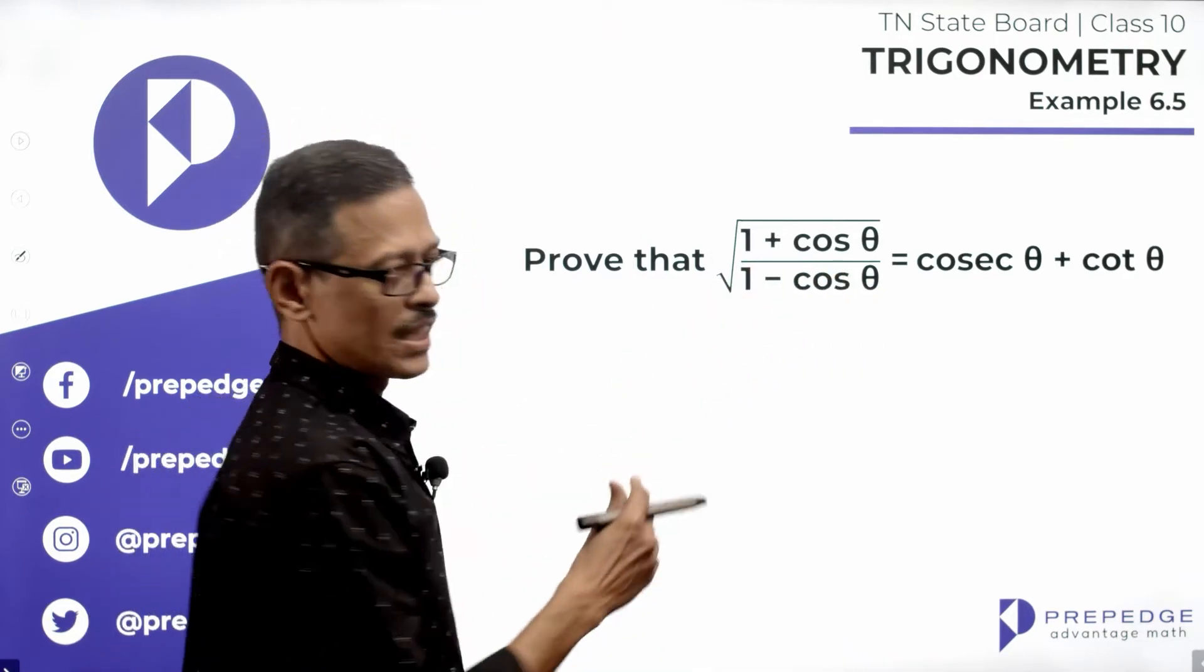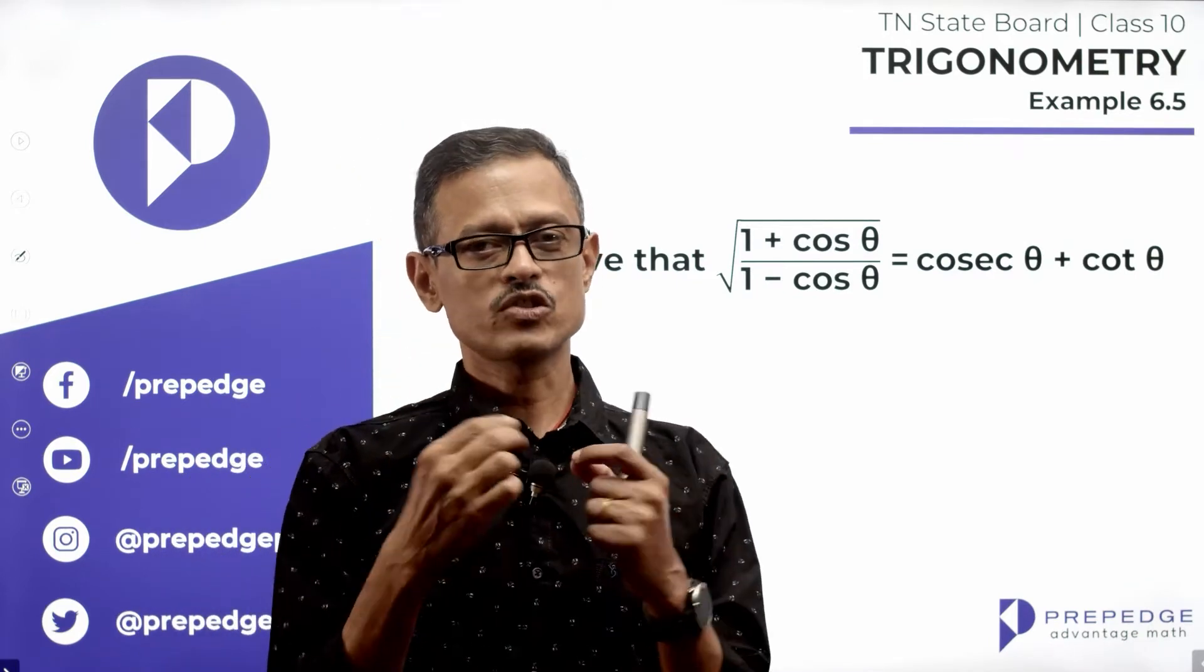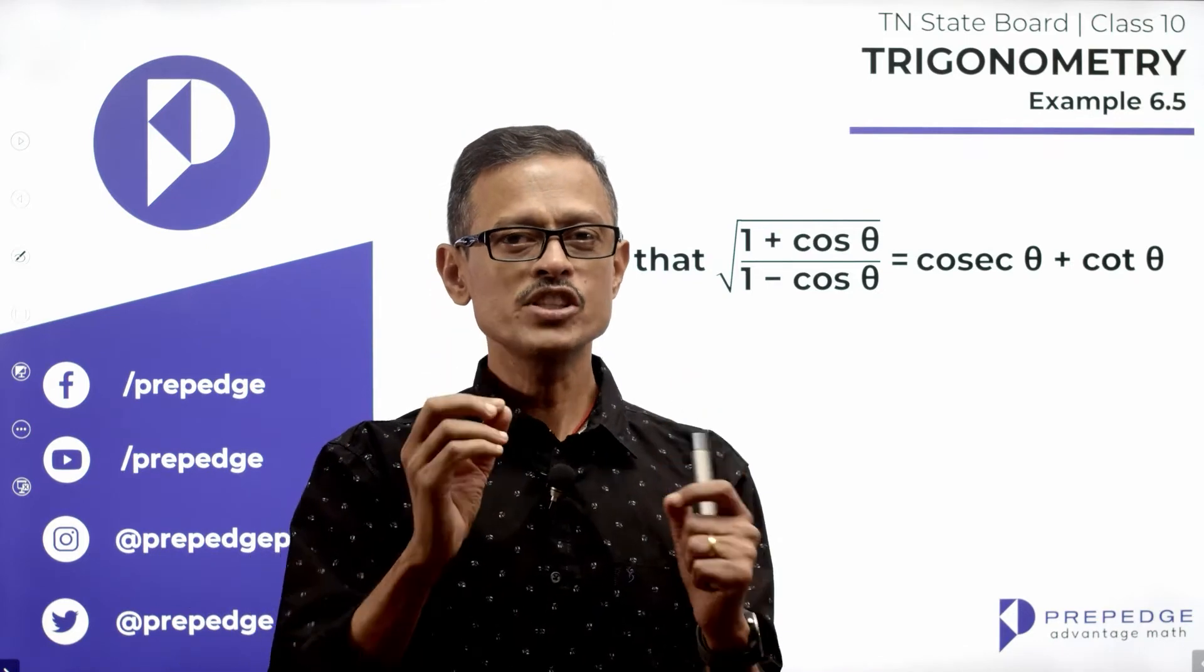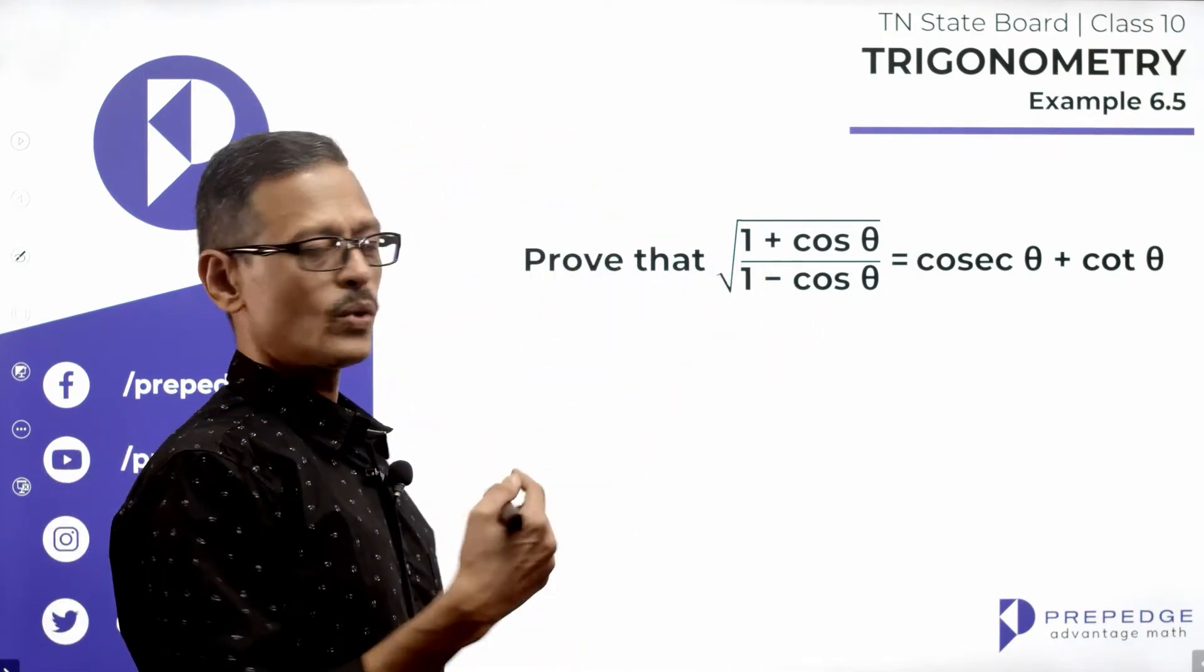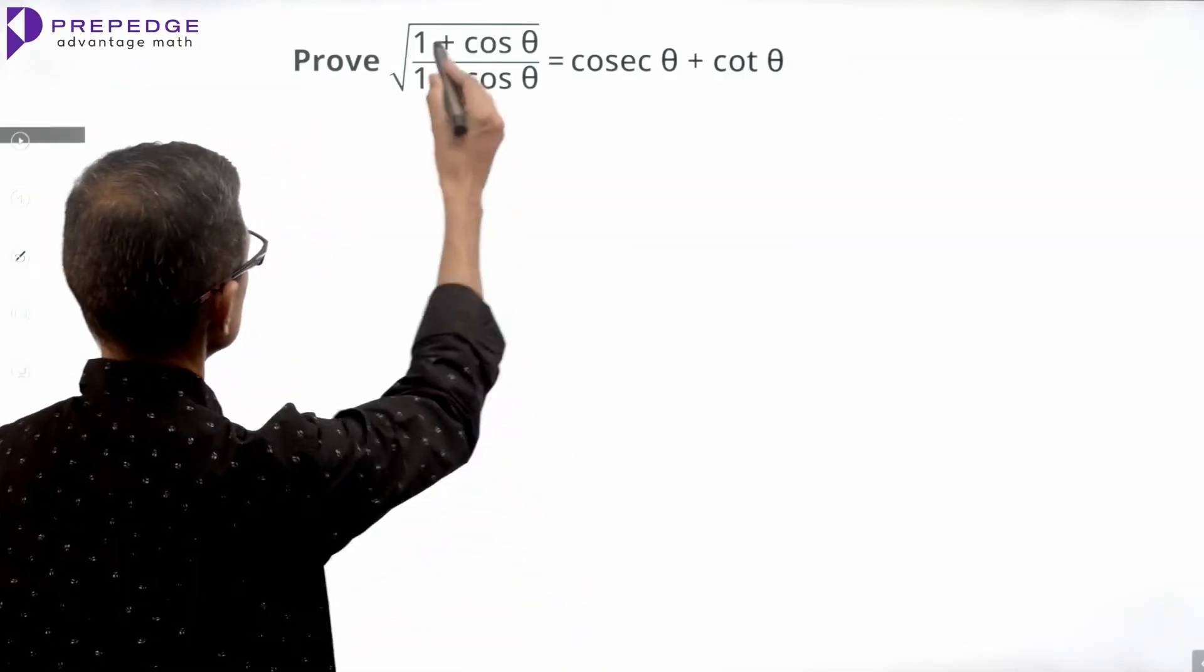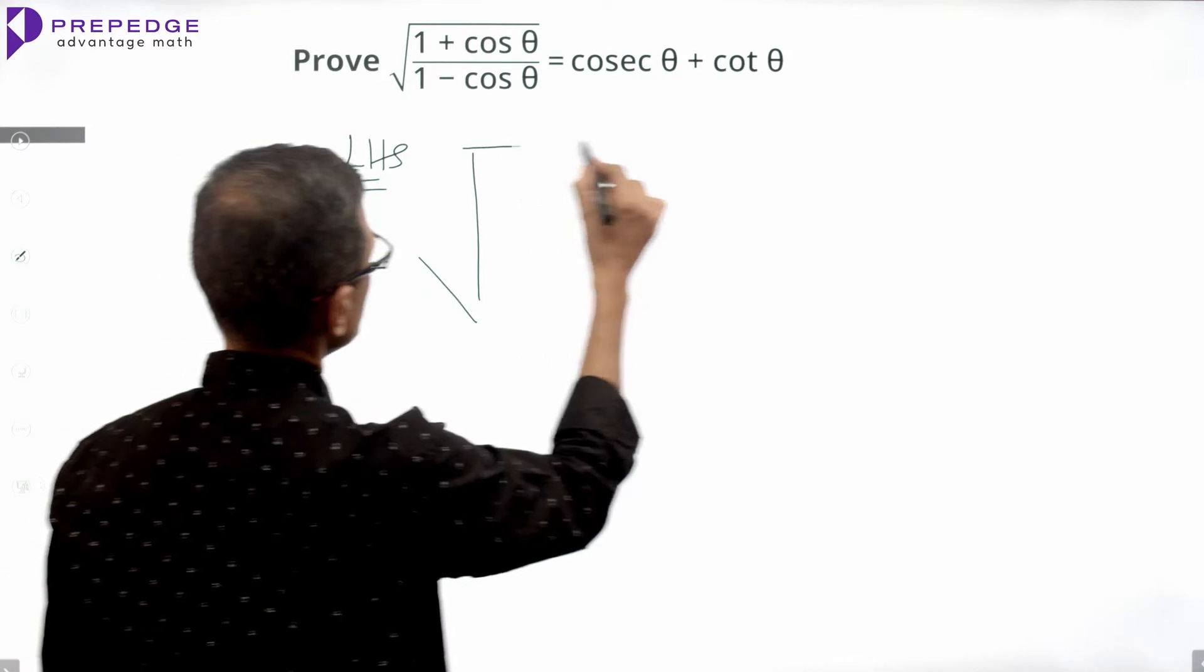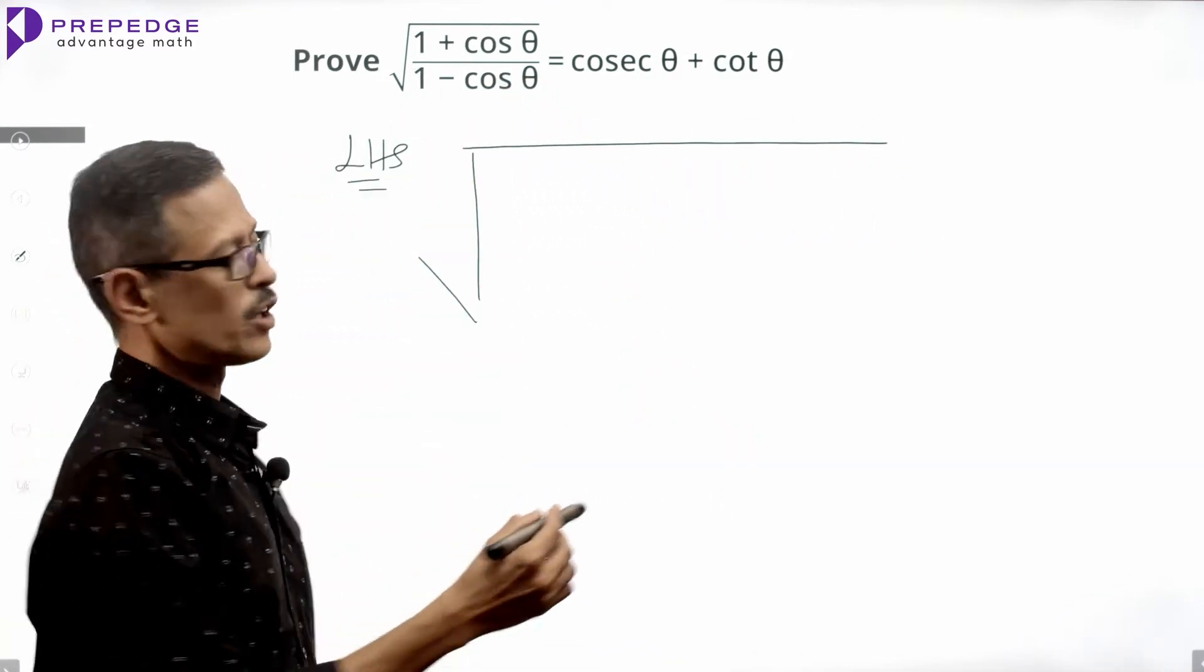When you see 1 minus cos theta in the denominator, 99% of the cases the problem is solved when you need to multiply and divide it by the conjugate of the denominator. 1 minus cos theta's conjugate is 1 plus cos theta. So what we will do is take the LHS and multiply and divide by 1 plus cos theta, which is the conjugate of the denominator.